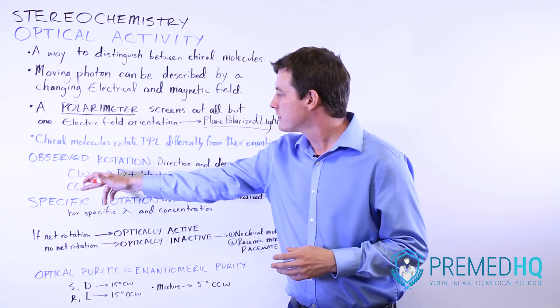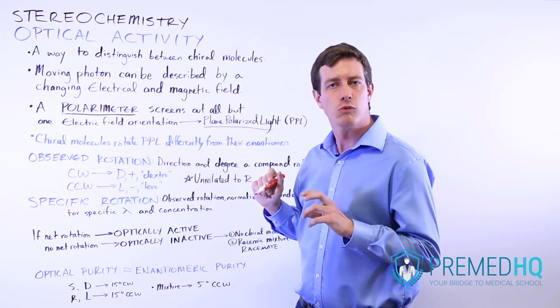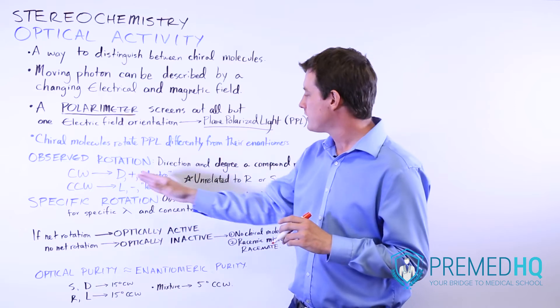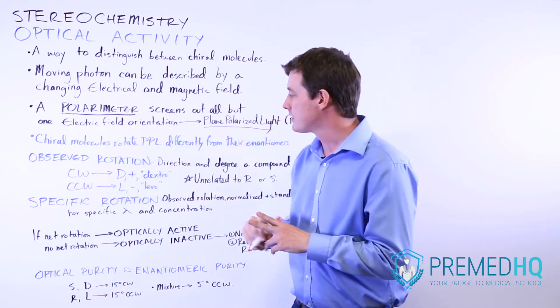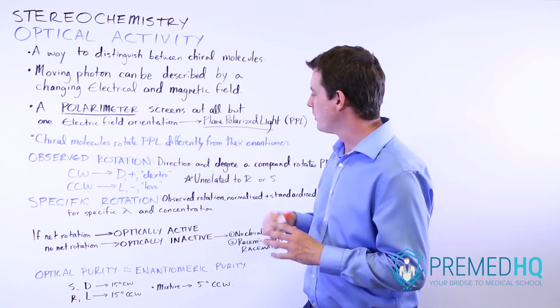If it rotates it clockwise, then it's called D or plus or dextrorotatory. If it rotates the plane polarized light counterclockwise, then it's called L minus or levorotatory, meaning that it's a leftward rotation.